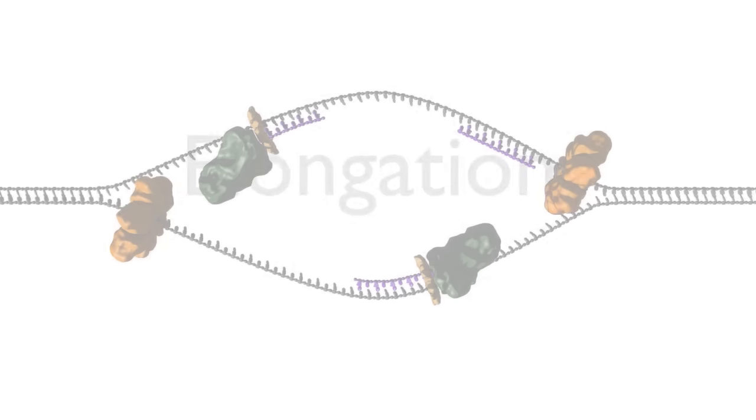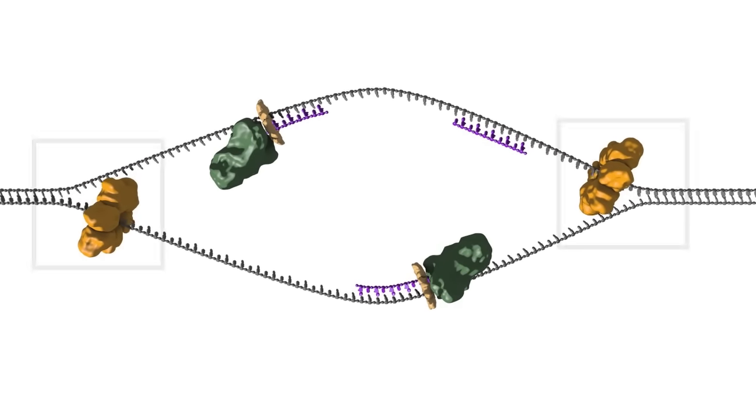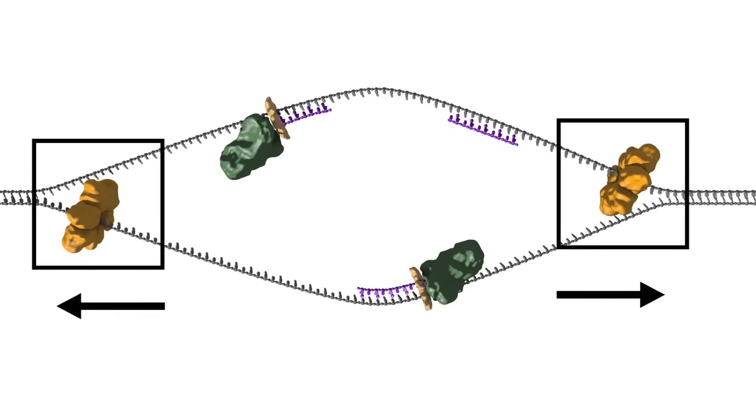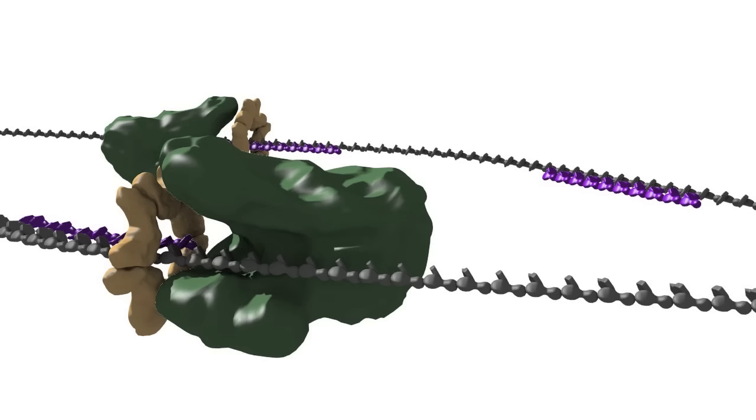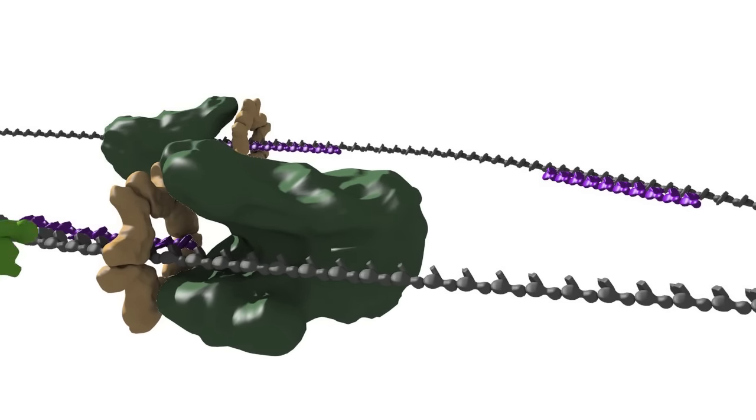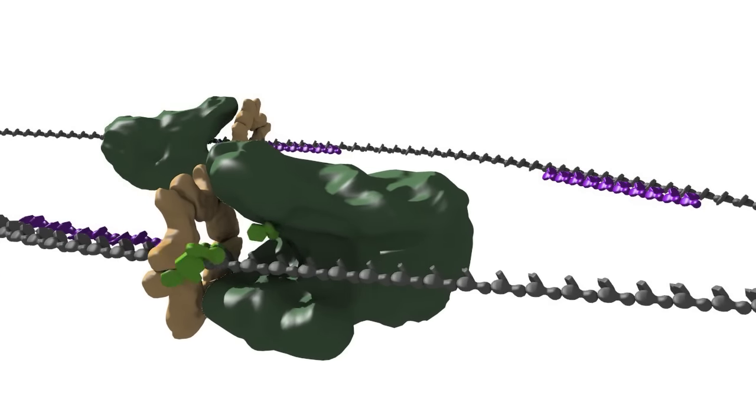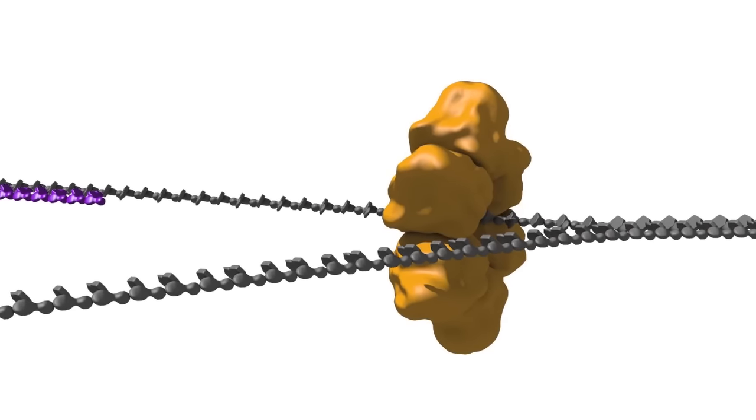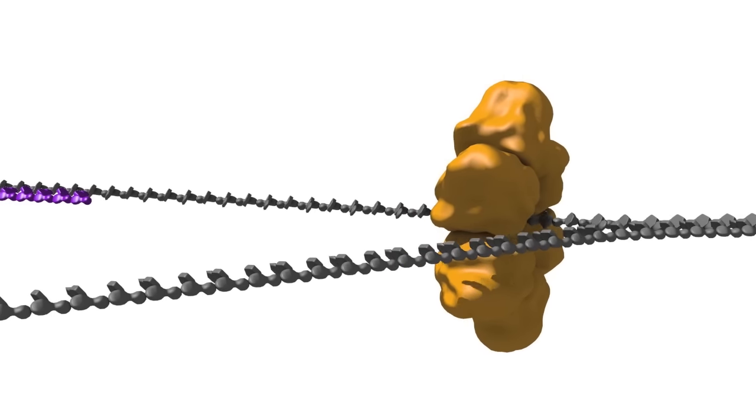During elongation, the replication bubble gets bigger as the helicases move apart, establishing two replication forks that move in opposite directions. The sliding clamp and polymerase unit at each replication fork moves along the DNA as the helicase unwinds the double-stranded DNA to expose single strands.